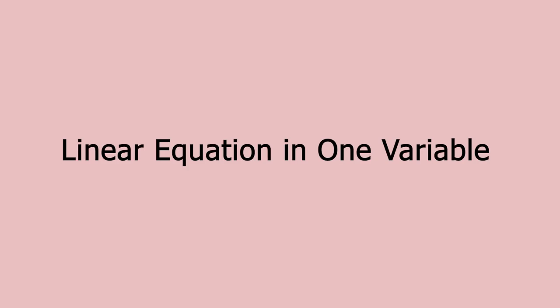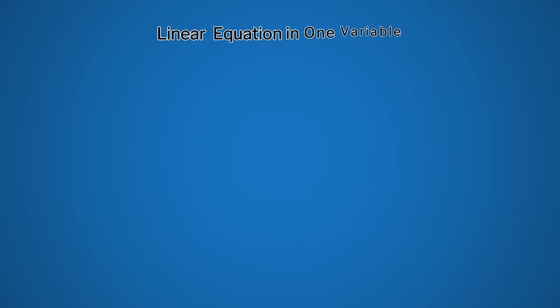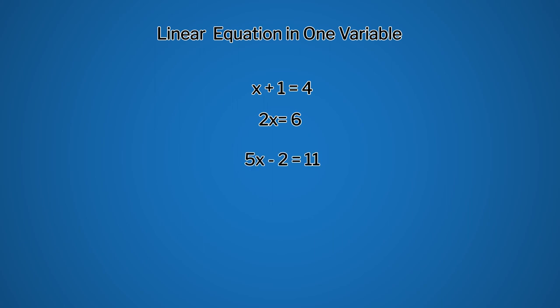Now we will see how to solve a linear equation in one variable. A linear equation in one variable simply means an equation where the value of one quantity is unknown. Here are a few examples: x + 1 = 4, 2x = 6, 5x − 2 = 11, and so on.